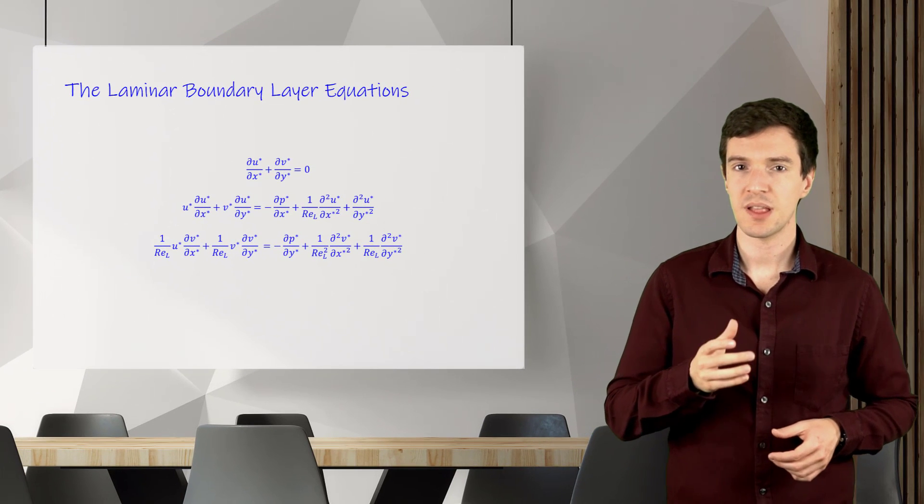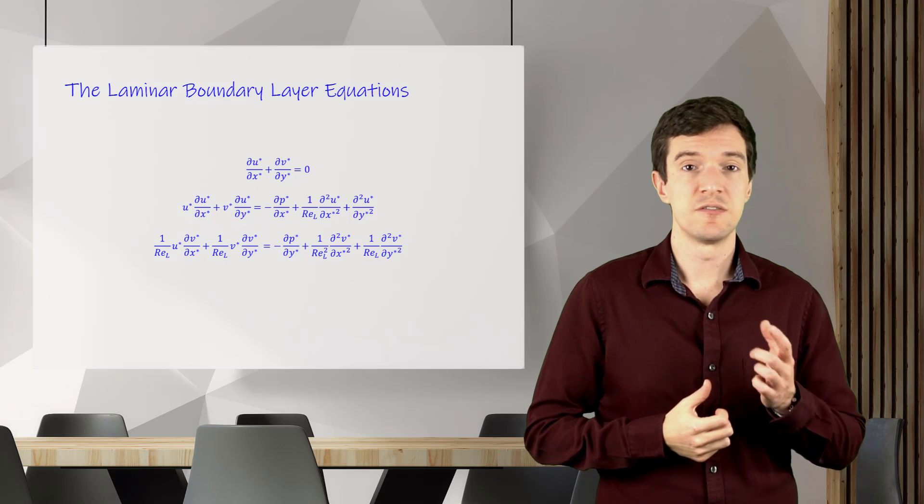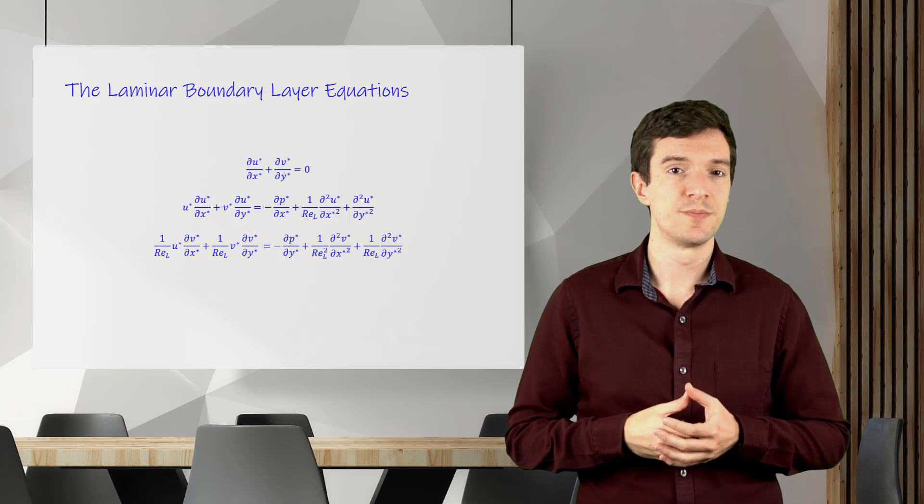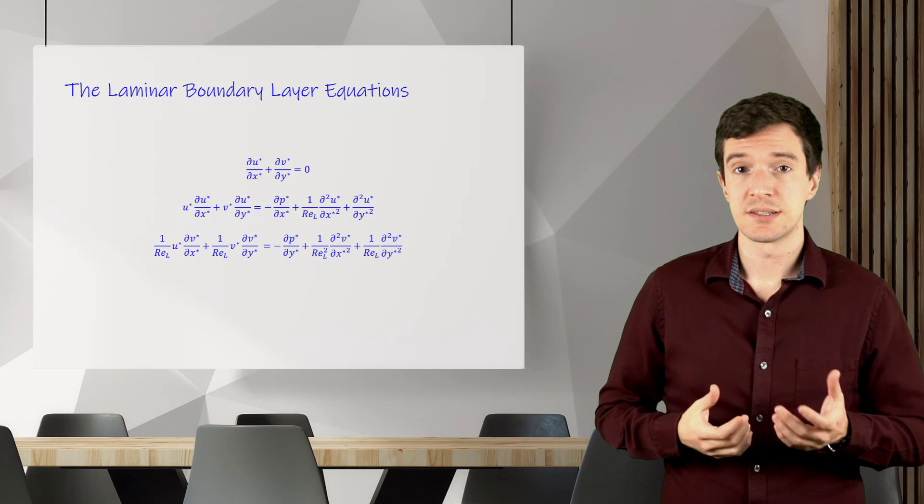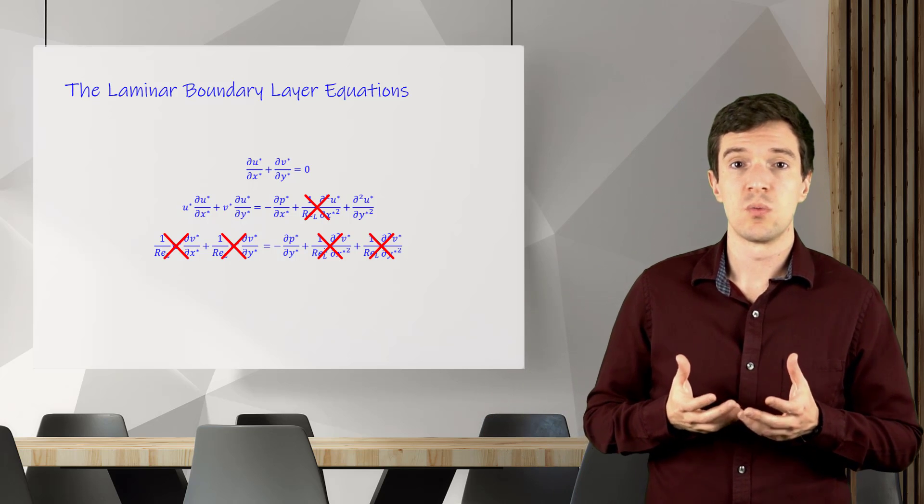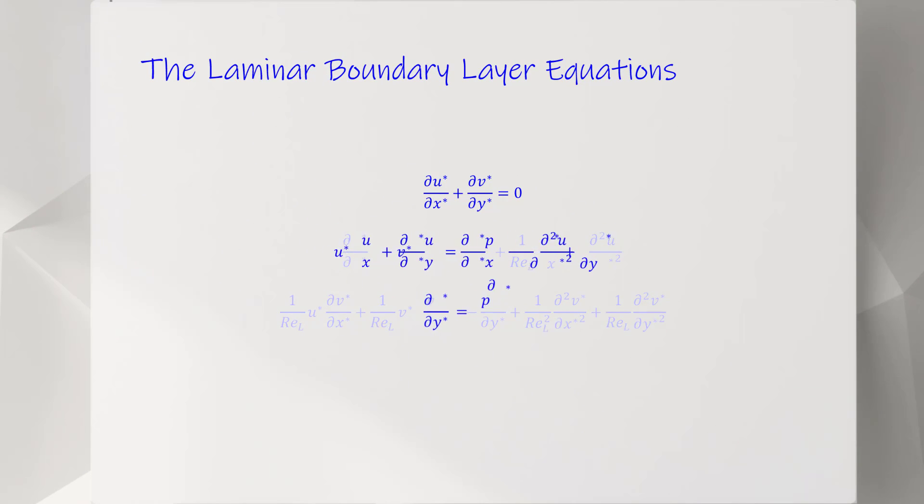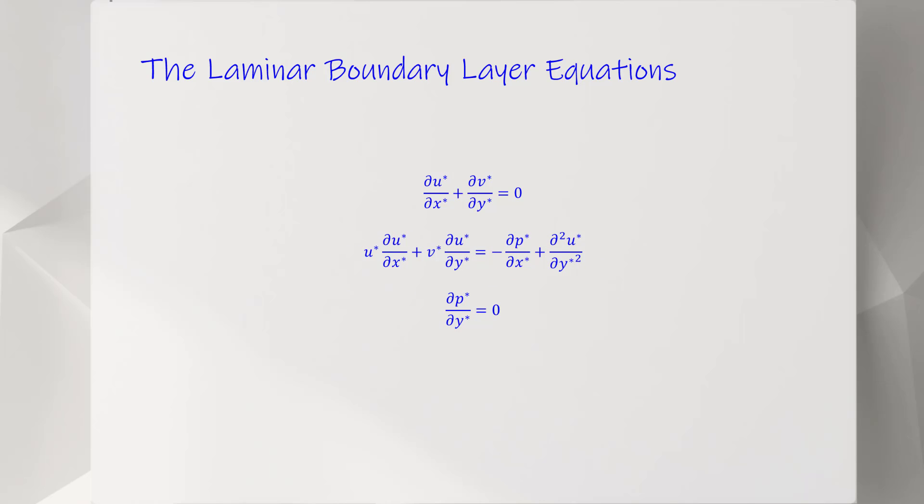Now, let's recall that a thin boundary layer exists if the Reynolds number is large. Under this assumption, we can neglect all the terms where the Reynolds number appears. This lets us simplify the equations into this final form.